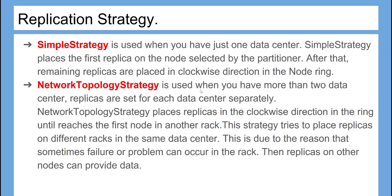Network topology strategy is used when you have more than two data centers. Replicas are set for each data center separately. This strategy places replicas in the clockwise direction in the ring until reaching the first node in another rack. It tries to place replicas on different racks in the same data center, because sometimes failure can occur in a rack, and replicas on other nodes can then provide data.